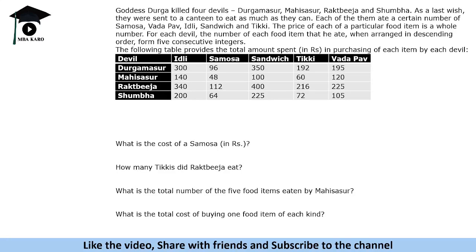Hello everyone, welcome to MBA Karo. I hope you must have solved this set by now. This set says that Goddess Durga killed four devils, and as a last wish there were five items and they spent a certain amount on different items. It is given that the price of each food item is a whole number, and for each devil the number of each food item eaten, when arranged in descending order, forms five consecutive integers.